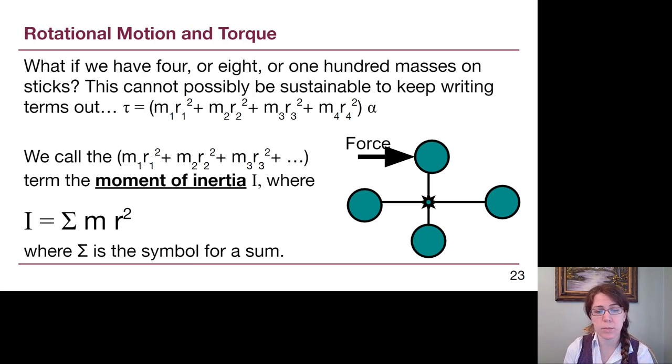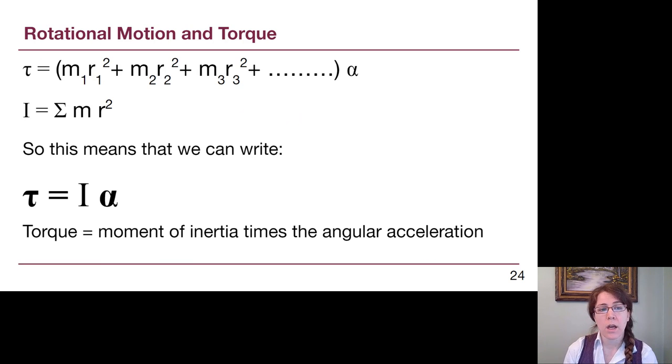So this fancy sigma symbol here is the symbol for a sum, and it means that no matter what the shape looks like, no matter how many masses on sticks, we can just add up all of those m r squared ideas together. So what this means, then, is we can replace that thing in parentheses, no matter if it's one stick, or two, or 18, with this idea of I, and now we have the big key idea from this portion of the chapter, that torque is the moment of inertia times the angular acceleration.